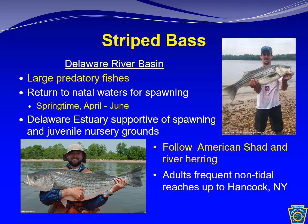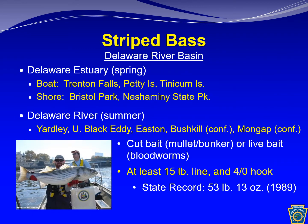The upper Estuary waters support spawning and then nursery grounds through the summer months for fry and juveniles, prior to their return to saltier waters. Adults generally also leave once spawning is complete, yet large adults have also been known to frequent non-tidal reaches of the Delaware River as far up as Hancock, New York. Catching these large fish is certainly exciting. During the spring spawning run, fishing focuses typically in the Delaware Estuary waters — from above Trenton Falls, Petty Island, or Tinicum Island, or from the shore at Bristol Park and Chamouni State Park, all offer excellent opportunities.